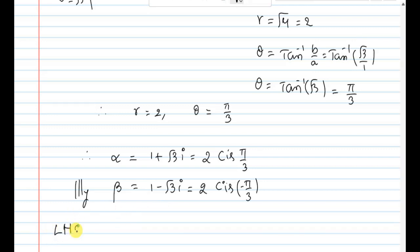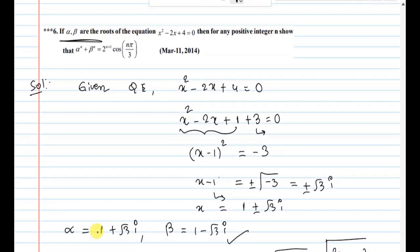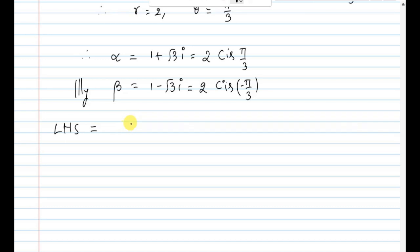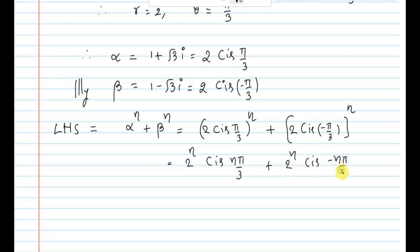Take LHS: alpha to the power n plus beta to the power n. Alpha to the power n is 2 cis pi by 3 whole power n, plus beta which is 2 cis minus pi by 3 whole power n. Distributing the power: 2 to the power n cis n pi by 3 plus 2 to the power n cis minus n pi by 3.